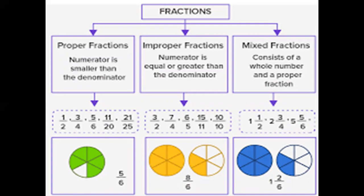Let's learn what a proper fraction is. In a proper fraction, the numerator is smaller than the denominator — a very simple definition. For example, one by two: two is greater than one, so the numerator is smaller than the denominator. Other examples are five by six, three by four, eleven by twenty, and twenty-one by twenty-five. Twenty-one is obviously smaller than twenty-five, so these are all proper fractions.